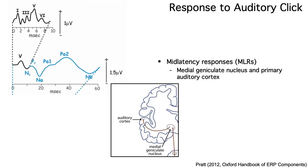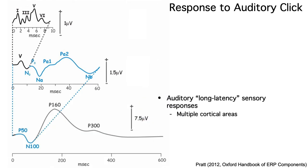If we look on a longer time scale and use different filter settings, we can see the mid-latency auditory responses, which are generated in the medial geniculate nucleus and the primary auditory cortex. On an even longer time scale, we can see what are called the long latency auditory responses, which come from a variety of cortical areas.